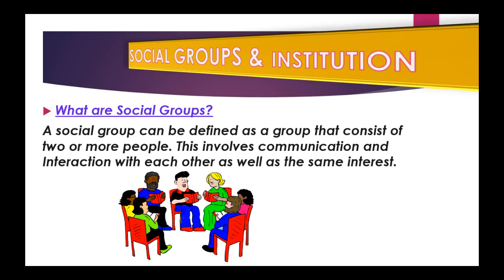While a group of people sitting in the airport together awaiting their flight would be considered just a group. A regular group is normally temporary, whereas a social group can also be temporary but on a long-term basis, and it can also be permanent. So learn the difference.